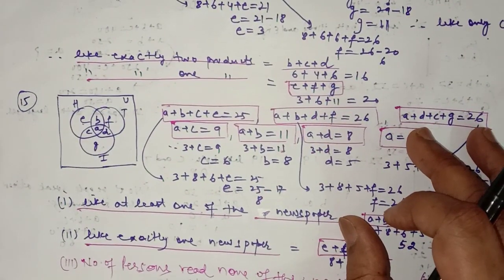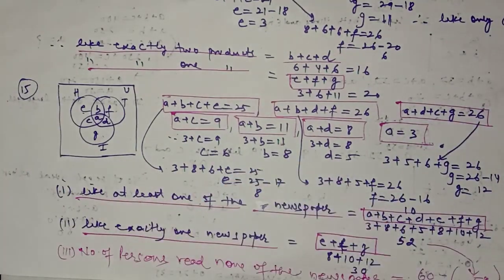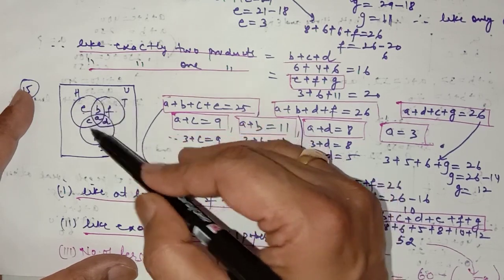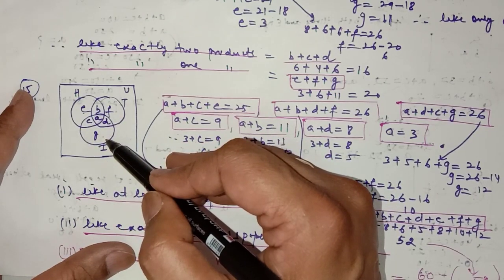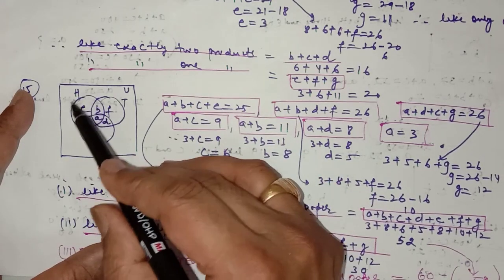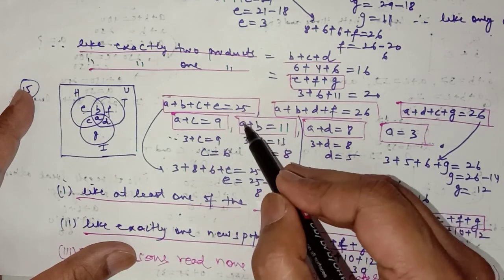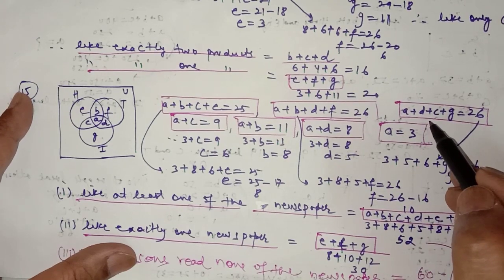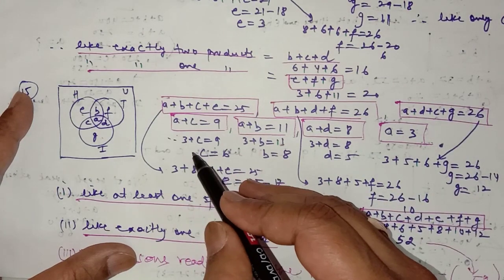In question number 15, similarly, in a survey of 60 people it was found that 25 people read newspaper H, 26 read newspaper T, and 26 read newspaper I. Circle H denotes persons reading H, circle T for newspaper T, and circle I for newspaper I. The number reading H is a + b + c + e = 25; reading T is a + b + d + f = 26; reading I is a + c + d + g = 26.